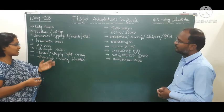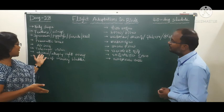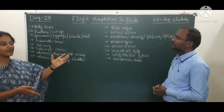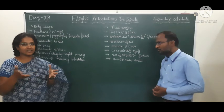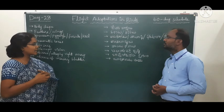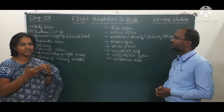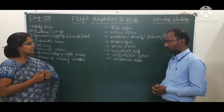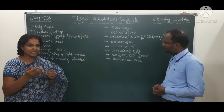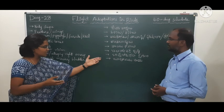Next we come to the absence of the right ovary. This is also one type of adaptation to decrease the body weight.